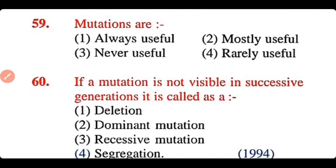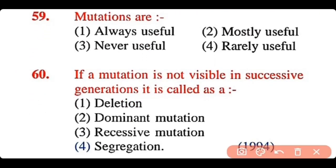Question 59: Mutations are: always useful, mostly useful, never useful, or rarely useful. The correct answer is option 4. Mutations are rarely useful.